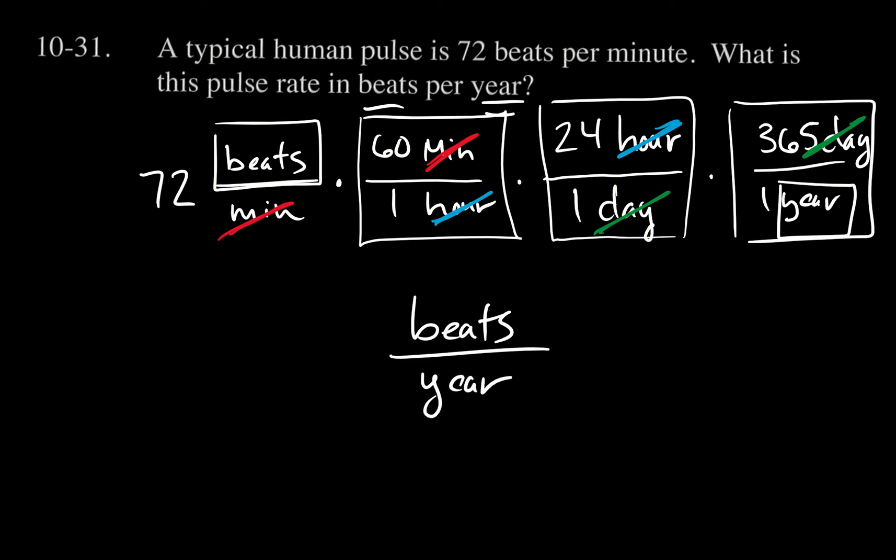Well, you can see to get that, I'm going to multiply 72 times 60 times 24 times 365. That's going to be huge. So 72 times 60 times 24 times 365... let me double check: 72, 60, 24, 365. Oh my gosh, are you kidding? My poor heart! I get...